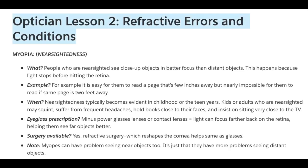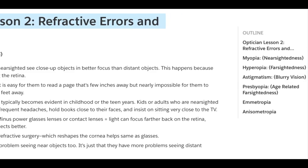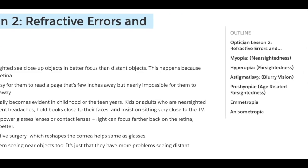Optician Lesson 2: Refractive Errors and Conditions. These are the things we're going to cover in Lesson 2, and these six are the top refractive errors and conditions you're going to find as an optician: Myopia (Nearsightedness), Hyperopia (Farsightedness), Astigmatism (Blurry Vision), Presbyopia (Age-Related Farsightedness), Emetropia, and Anisometropia.